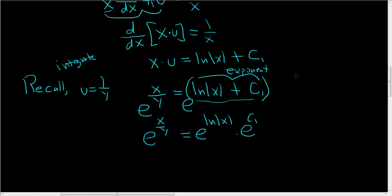E to the ln absolute value of x times e to the c1 is e to the ln absolute value of x plus c1. Just like x² times x³ is x to the 2 plus 3. Same thing. Okay. At this point, we have e to the x over y equals e to the c1 times the absolute value of x.